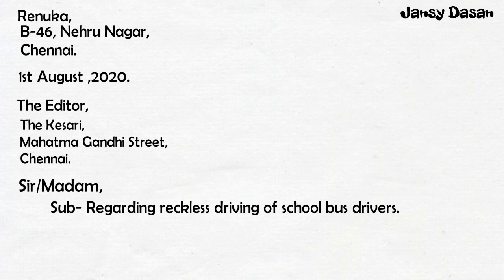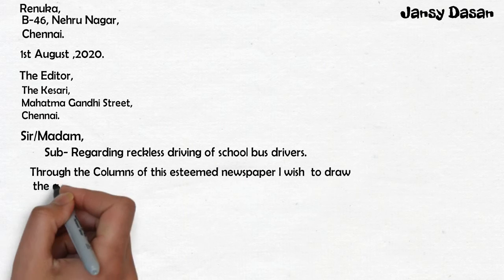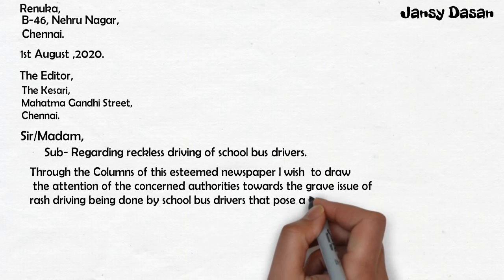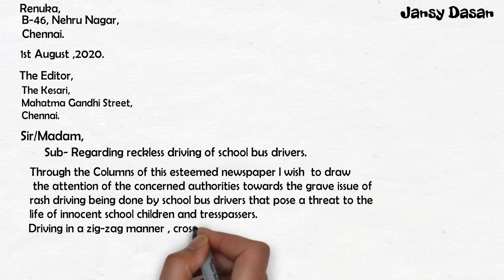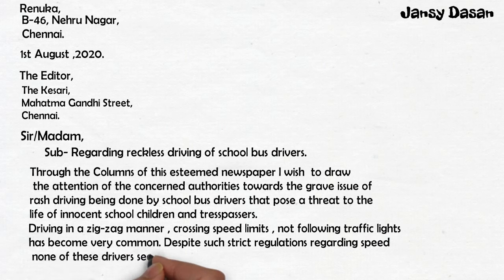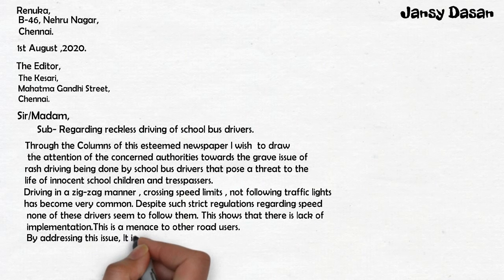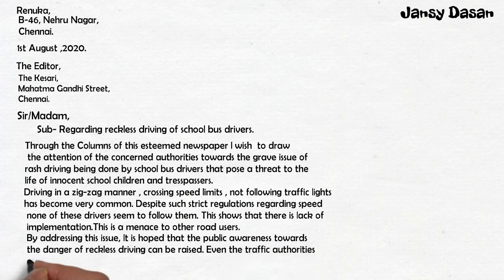The body is divided into three parts. The first paragraph contains the purpose of the letter: 'Through the columns of your esteemed newspaper, I wish to draw the attention of the concerned authorities towards the grave issue of rash driving being done by school bus drivers, that poses a threat to the lives of innocent school children and trespassers.' Second paragraph: 'Driving in a zigzag manner on packed roads, crossing speed limits, not following traffic lights has become very common. Despite such strict regulations regarding speed, none of these drivers seem to follow them. This shows that there is a lack of implementation. This is a menace to other road users.' Third paragraph: 'By addressing this issue, it is hoped that public awareness towards the danger of reckless driving can be raised. Even the traffic authorities can take strong measures against the reckless drivers.'